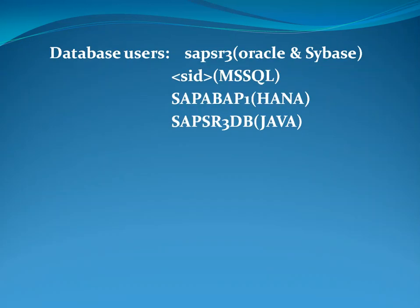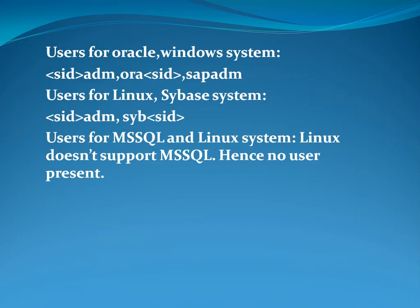The other database users are: SAP SR3 for Oracle, SAP SR3 for Sybase, SAP SID for Sybase, SAP ABAP1 for HANA, and SAP SR3 DB for Java. For Oracle on Windows, the OS users are SID ADM, ORA SID, and SAP ADM. For Linux with Sybase, the users are SID ADM, CDDM, and Sybase SID.